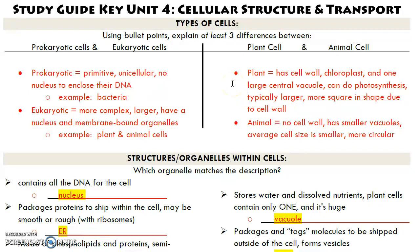The difference between plant and animal cells is that plant cells have everything that animal cells have, plus a cell wall, a chloroplast, and a large central vacuole. Because they have a chloroplast, they can do photosynthesis. Plant cells tend to be a little bit larger and square in shape because they have a cell wall. Animal cells don't have cell walls. They have small vacuoles to store water instead of one large central vacuole. Their cell size on average is smaller, and they tend to be more circular or blob-shaped.